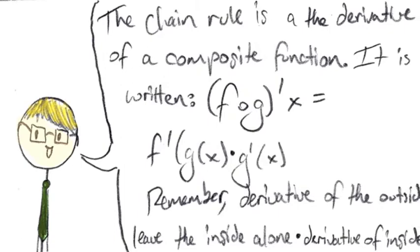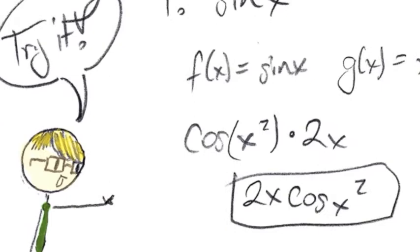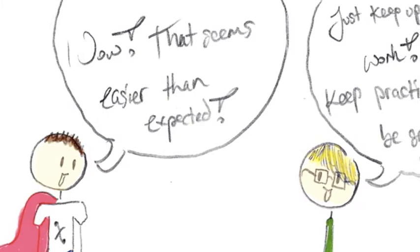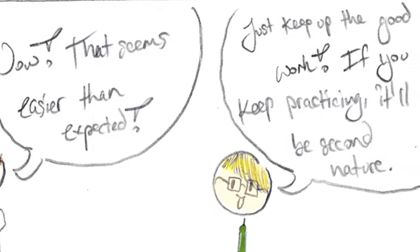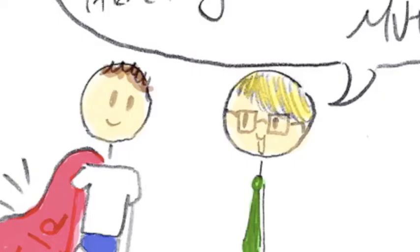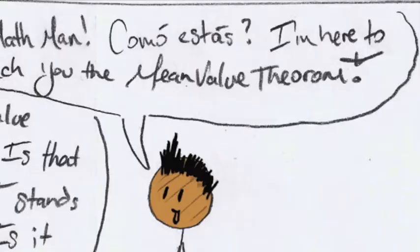Try it! Is it 2x cosine of x squared? Wow, that seems easier than expected. Just keep up the good work. If you keep practicing, it'll be second nature. Chapter 4 is pretty well a continuation of Chapter 3. Let me add another item into your uniform. Now, the MVT. Hola, Math Man. Como estas? I'm here to teach you the Mean Value Theorem. The Mean Value Theorem? Is that what NVT stands for? It sounds kind of mean.